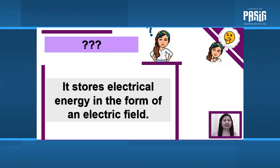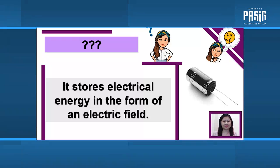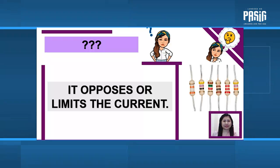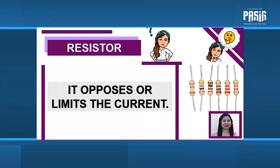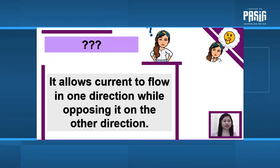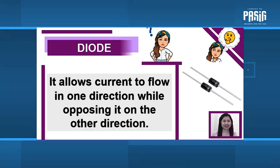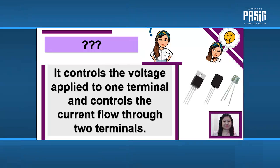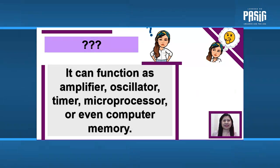Number 1: It stores electrical energy in the form of an electric field. The answer is capacitor. Next: it opposes or limits the current — that is a resistor. It allows current to flow in one direction while opposing it in the other direction — that is a diode. It controls the voltage applied to one terminal and controls the current flow through two terminals — that is a transistor.